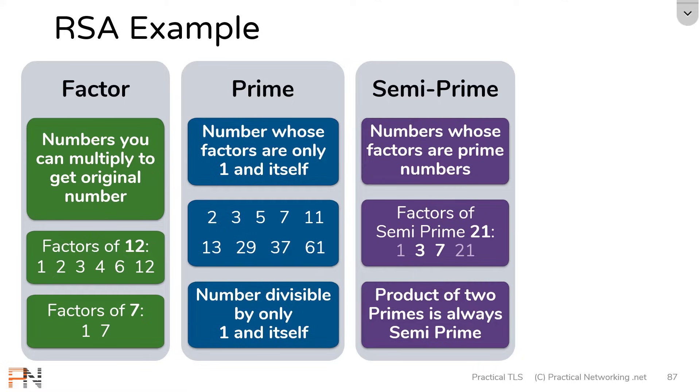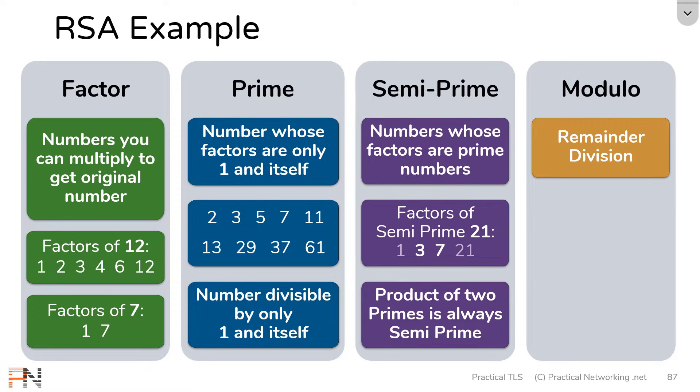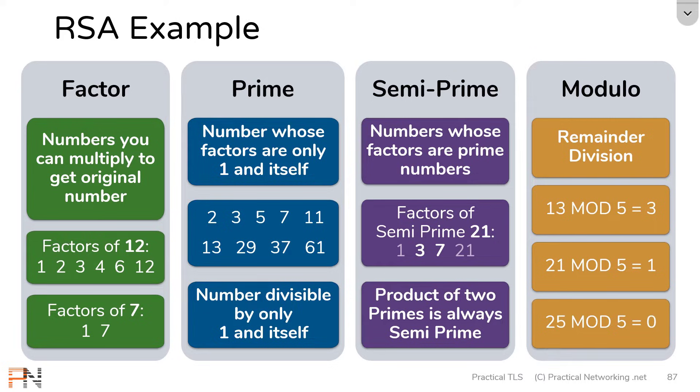Finally, the last term we have to review is modulo, and that sounds more complicated than it is. All modulo is is simply remainder division. For example, if I give you the problem 13 mod 5, what I'm asking you is to tell me what's left over after you divide 13 by 5. Well, 5 can go into 13 twice, that will get you up to 10, and you have 3 left over between 10 and 13. Another example, if I were to give you 21 mod 5, I'm asking you what's left over if you divide 21 by 5. Well, 5 can go into 21 4 times evenly, that will get you to 20, and you have 1 left over. And a final example, if I were to ask you 25 mod 5, I'm asking you what's left over if I divide 25 by 5. Well, since 5 can go into 25 evenly, there's 0 left over.